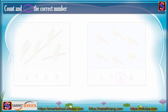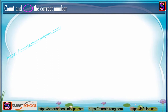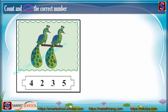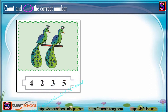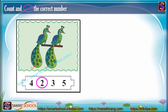Here is a picture — can you tell me how many there are? Two, right? It's one and two. We have two peacocks, so we are going to circle two.